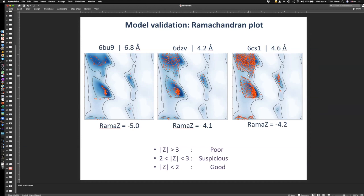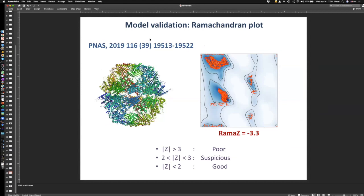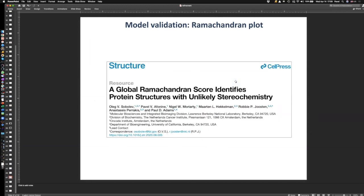The Ramachandran Z-score is implemented in Phoenix thanks to Oleg Sobolev, and it's also used in PDB-REDO validation. If you're not trained to visually read Ramachandran plots, calculate the Z-score — Phoenix provides it automatically every time you run real-space refinement and in the validation tools. Keep an eye on it. The method is published in Structure about a year ago if you want to learn more.